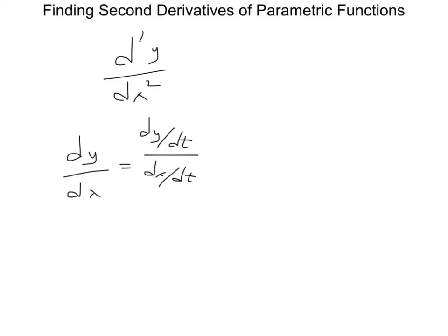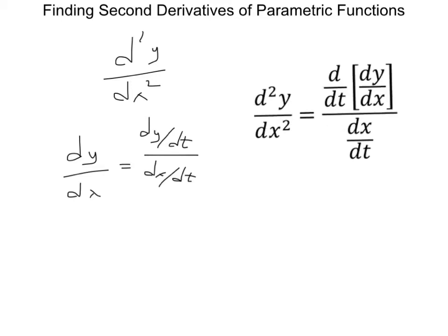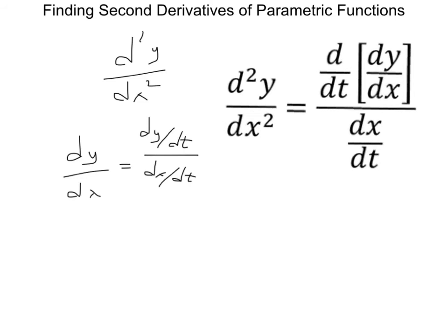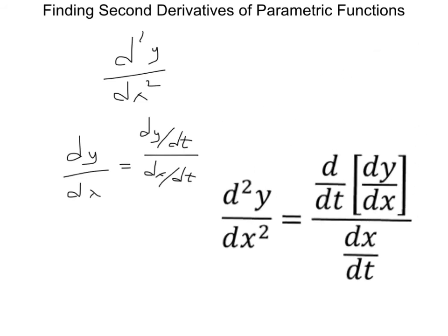And so the formula that we use to find this second derivative is right here. If you want to find the second derivative of something in parametric, you first find that first derivative, dy dx. You take the derivative of that with respect to t and divide that by the derivative of x with respect to t.